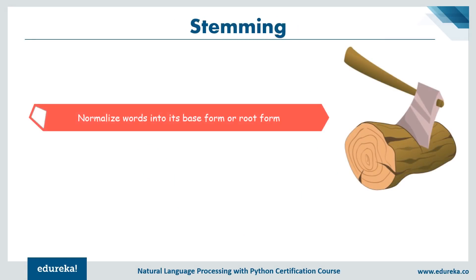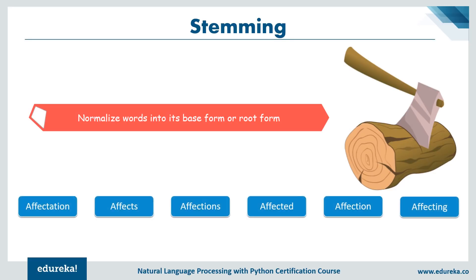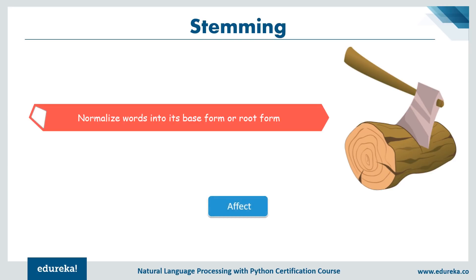Once we have tokens, we need to make changes to them using stemming. Stemming normalizes words into their base or root form. For example, the words 'affectation', 'effects', 'affections', 'affected', 'affection', and 'affecting' all have the root word 'affect'. The result may not always be the root word — the algorithm works by cutting off the end or beginning of the word using common prefixes and suffixes. This indiscriminate cutting can be successful in some occasions but not always.